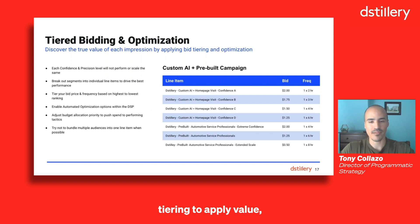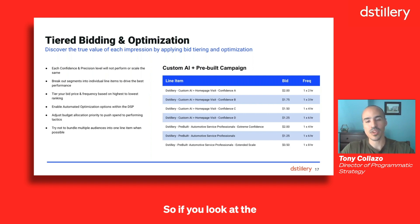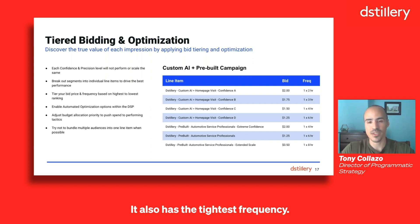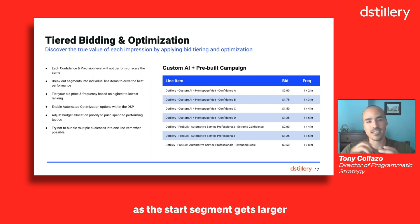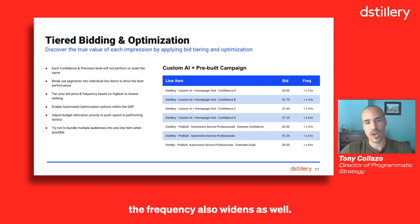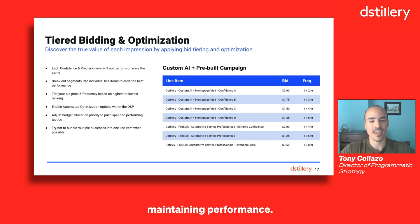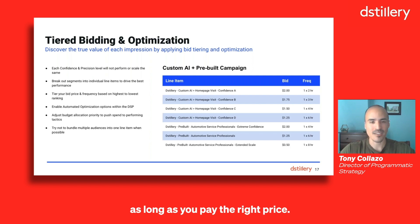When I talk about bid tiering to apply value, I'm speaking about applying a higher bid to higher ranked segments. The Confidence A line item has the highest bid out of the levels. It also has the tightest frequency — we want a higher win rate and tighter frequency against high-performing segments. That waterfalls down as the segments get larger, because we can afford to lose on win rate as the segment gets larger without risking performance or scale. The frequency also widens as well. It's really about striking a balance between driving scale and maintaining performance — every segment, even though they are different sizes, all have value as long as you pay the right price.